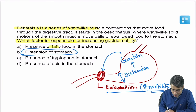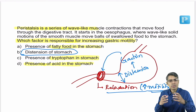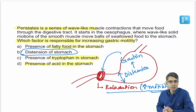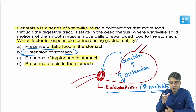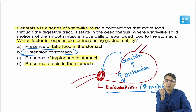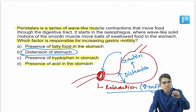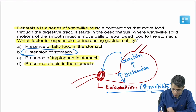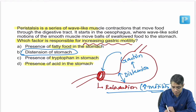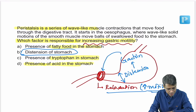Presence of fatty food, amino acids, or acid in the stomach or duodenum causes contraction of the pyloric sphincter by a reflex mechanism, which decreases gastric motility. So the answer to 'which factor increases gastric motility' is distension of the stomach, because it produces gastrin, which relaxes the pyloric sphincter.